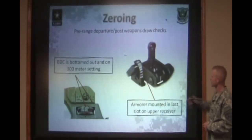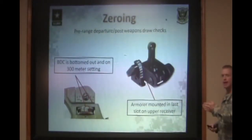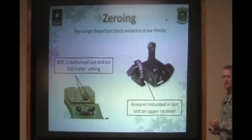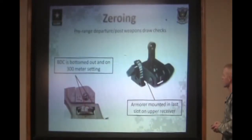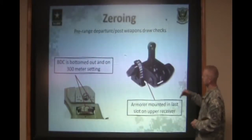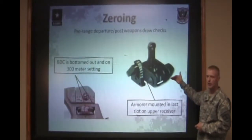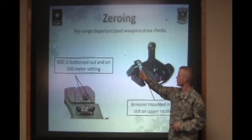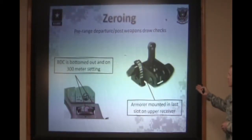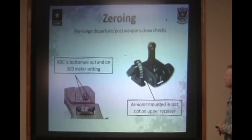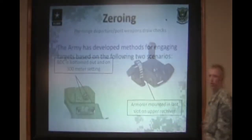On the backup iron sight, make sure that the armorer mounted it in the very last slot on the upper receiver — it needs to be in this slot for the sight system to work correctly. For zeroing the backup iron sight on an M4, it needs to be on the 300 notch, so you'll move your elevation to the 300 line. For zeroing the backup iron sight on an A4, you need to put it on the little white line in between the 300 and the 400 yard settings.